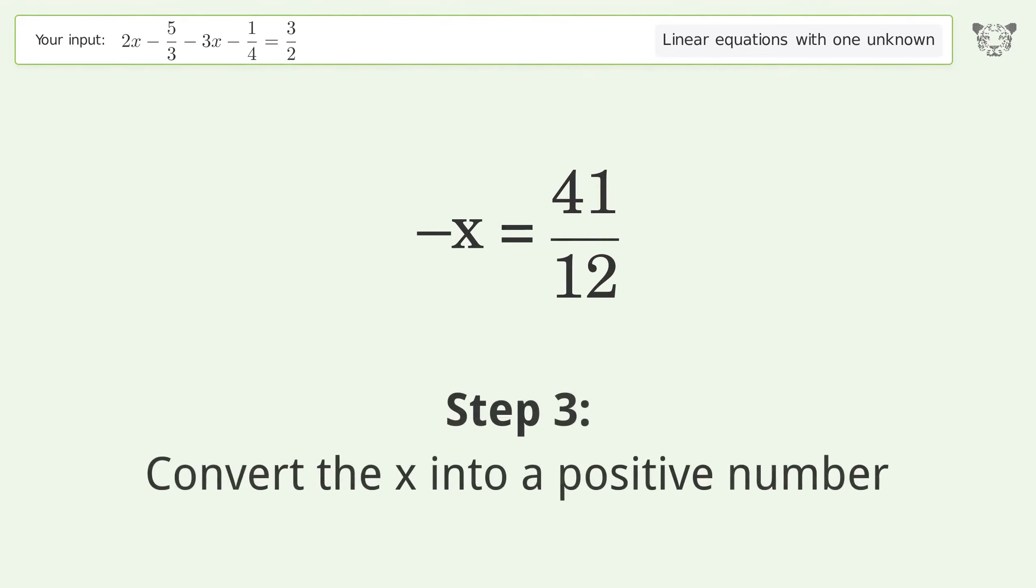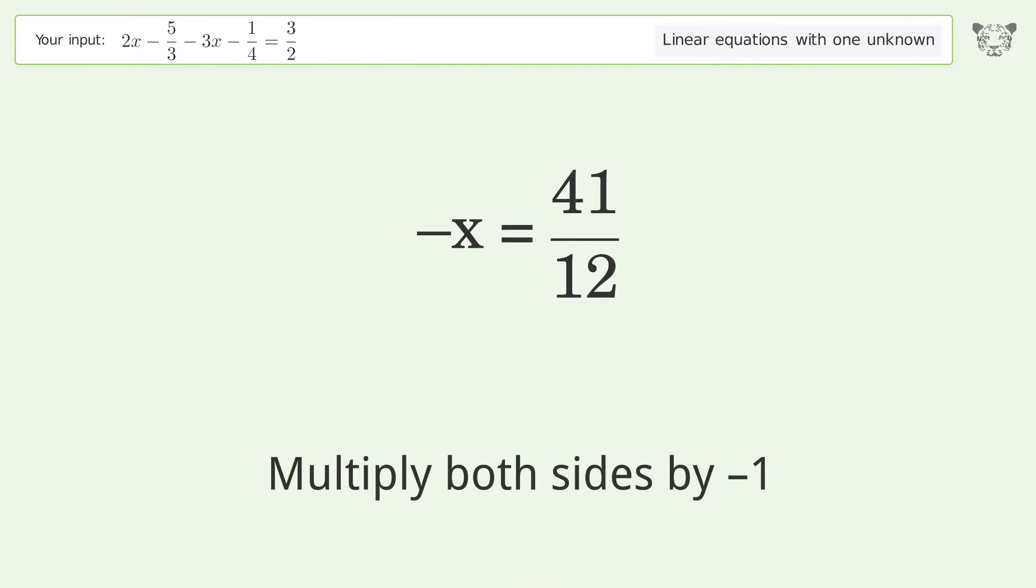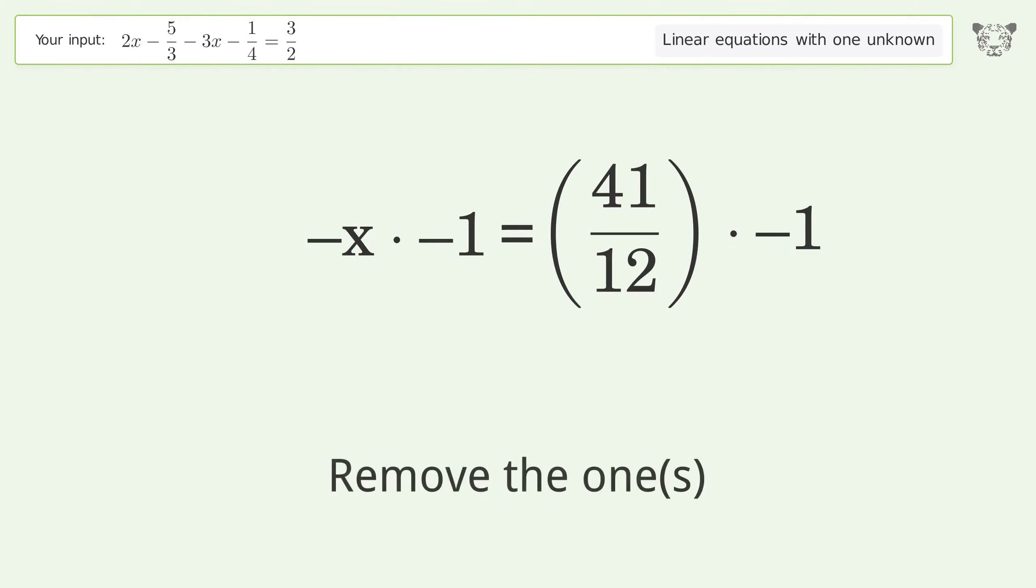Convert the x into a positive number. Multiply both sides by negative 1. Remove the ones.